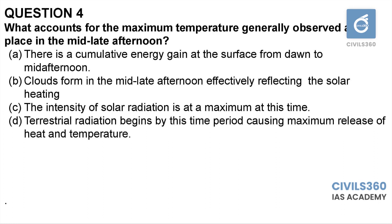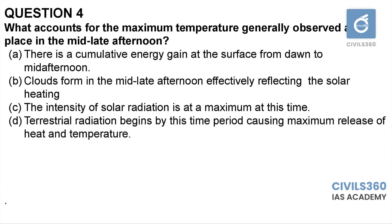Fourth question: what accounts for the maximum temperature generally observed at a place in the mid to late afternoon? Option A states there is a cumulative energy gain at the surface from dawn to mid-afternoon. Option B says clouds form in the mid to late afternoon, reflecting solar heating. Option D says terrestrial radiation begins by this time period, causing maximum heat release — this is incorrect, as terrestrial radiation is experienced from early morning itself.